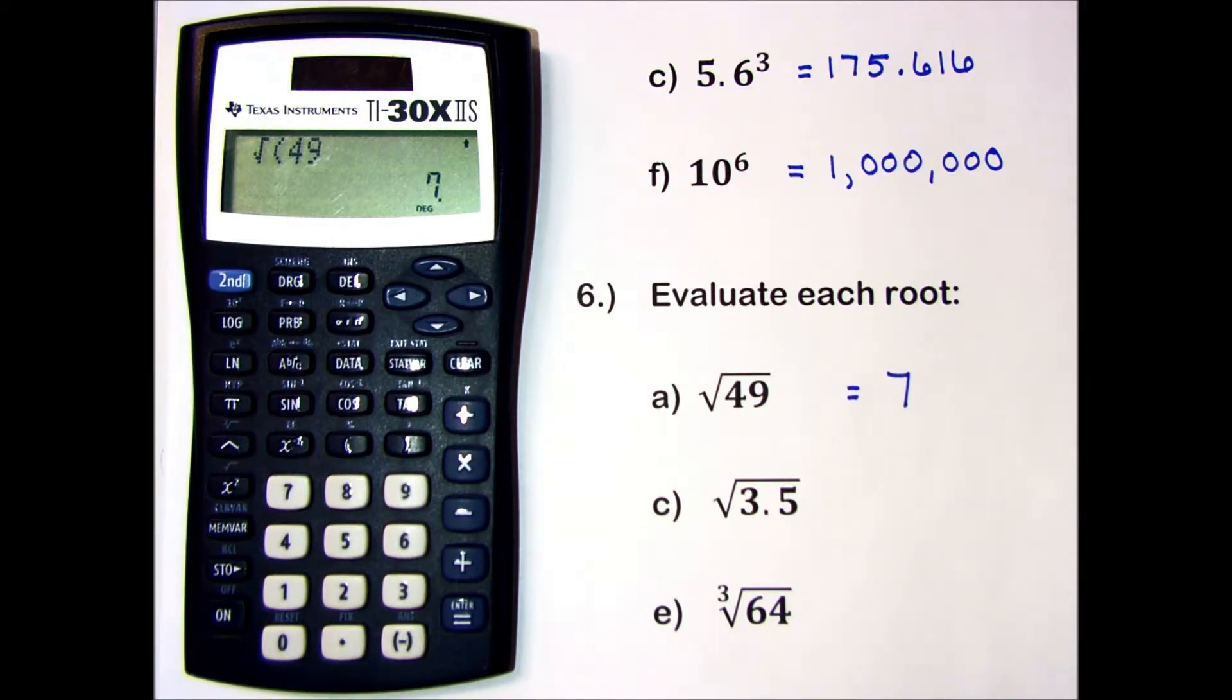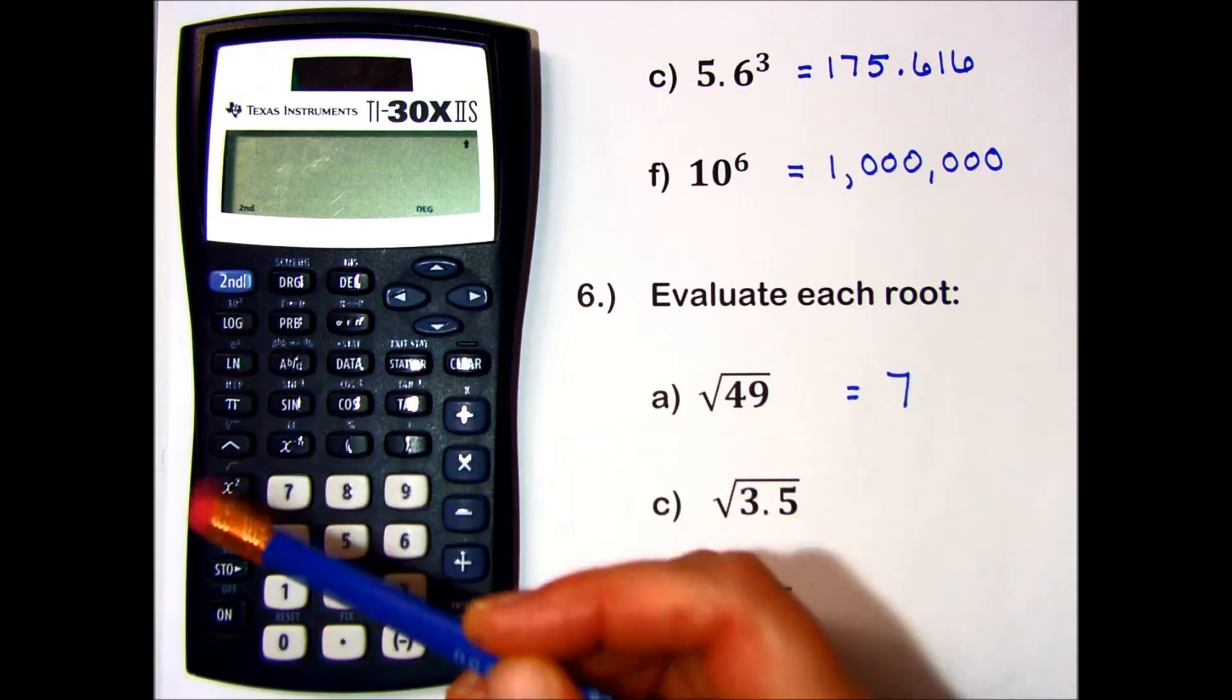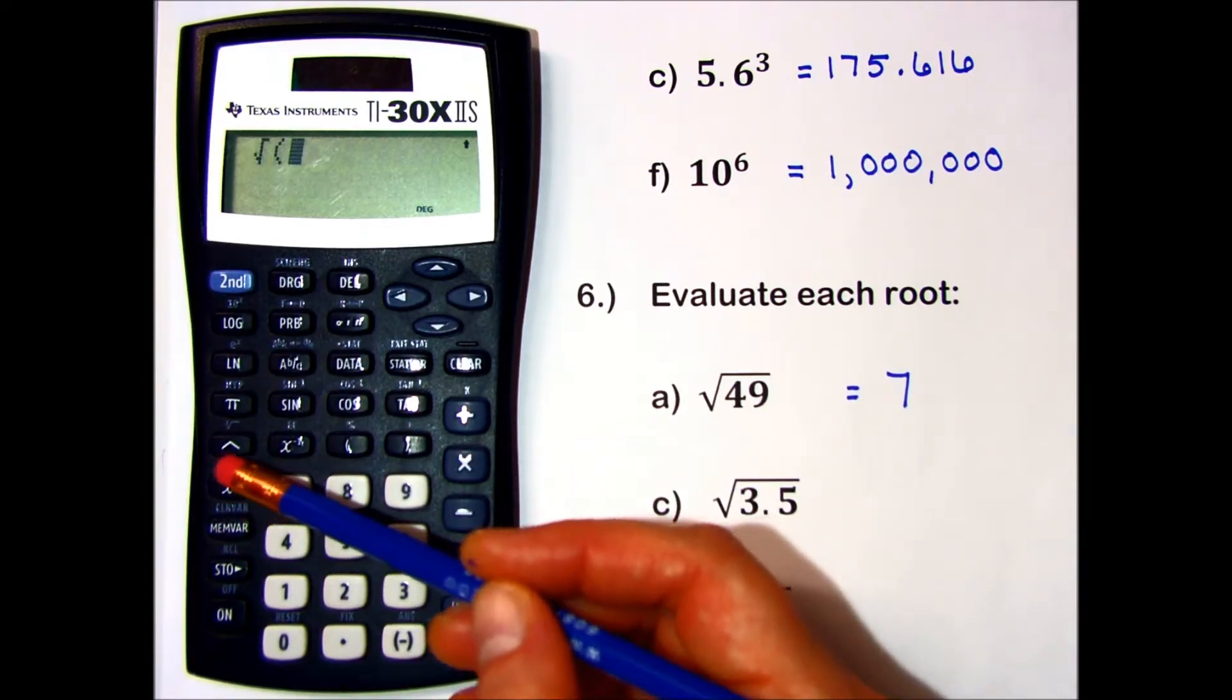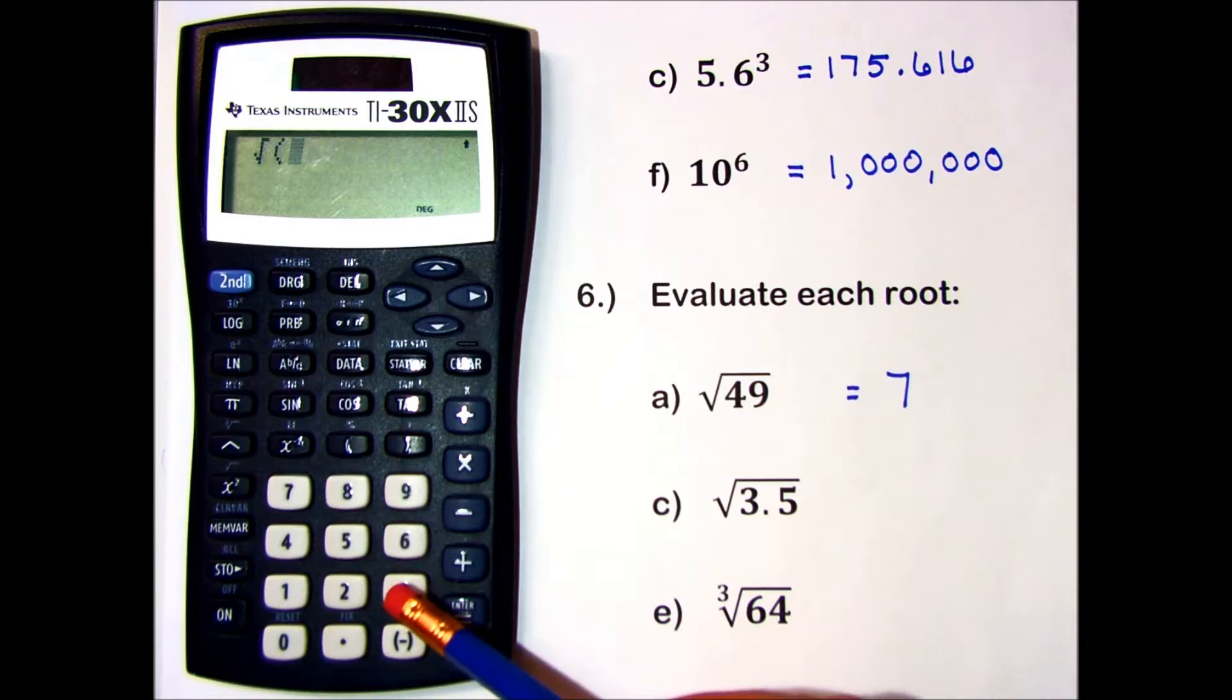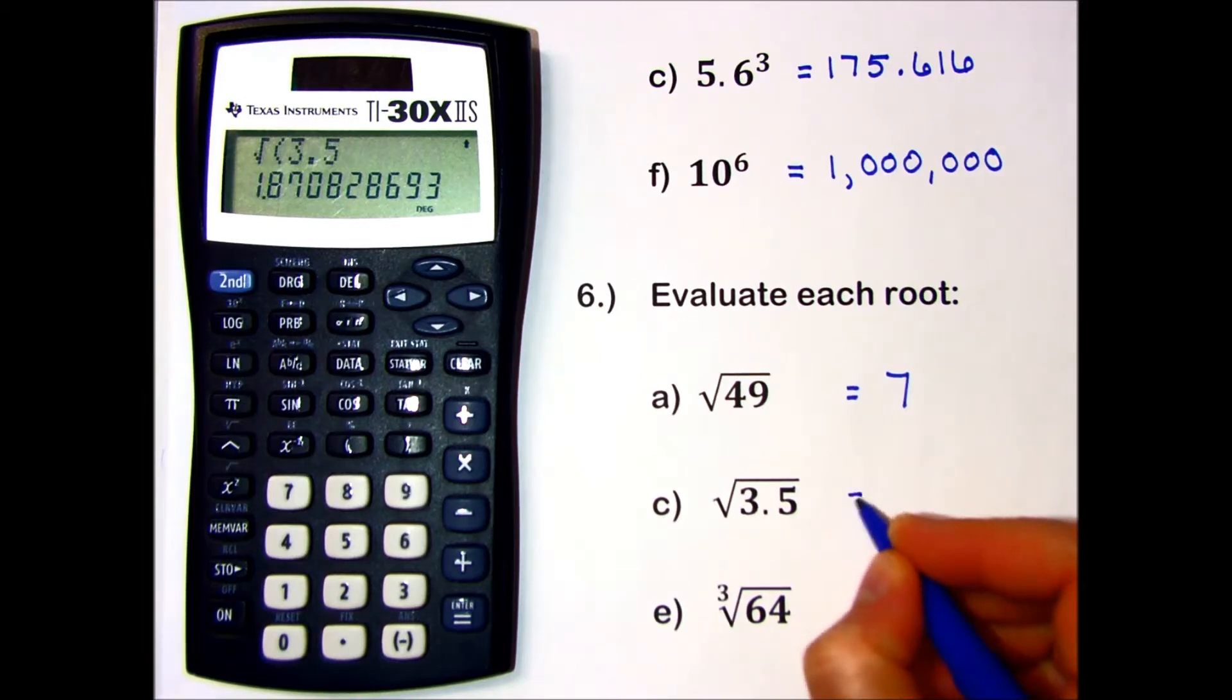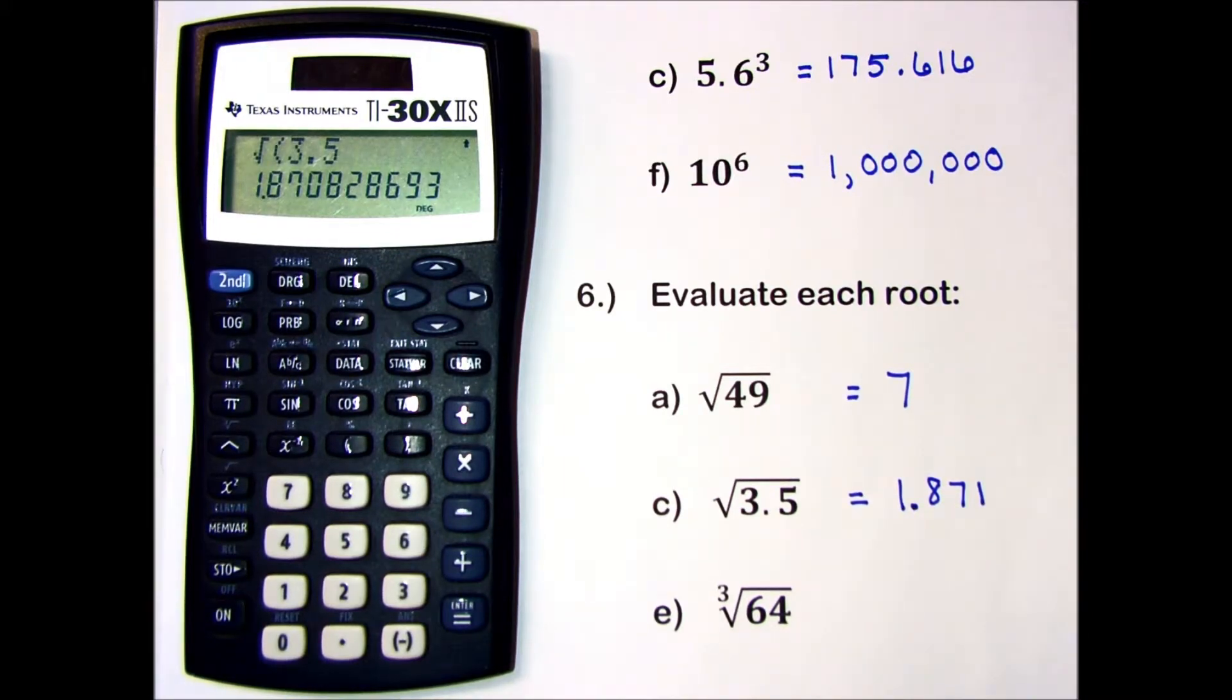Let's try the square root of a decimal number. I press 2nd, my x squared button, but I'm tapping into the little blue symbol on top, the square root. The square root of 3.5 equals 1.871 if I round my answer to 3 decimal places.